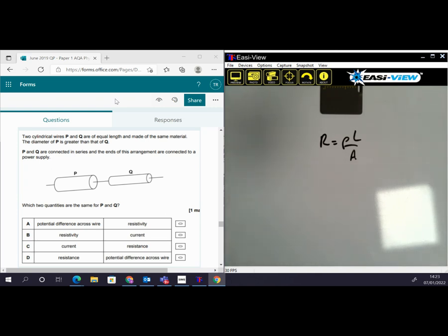And we could stop there, but let's check the others. So C, current is the same, but resistance isn't, for reasons I've already explained. And then D, resistance isn't the same, nor is potential difference the same.